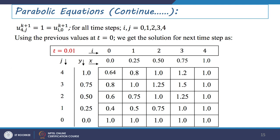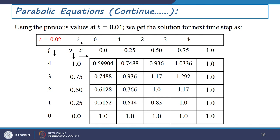The values at T = 0.01 represent U at the first time level and are used for the next step calculation. Using those previous values, the solution at T = 0.02 is computed for I = 0, 1, 2, 3, 4 and J = 0, 1, 2, 3, 4. Boundary values remain fixed; only interior values are updated using the explicit formula. This completes the two-step explicit solution. Thank you for listening to this lecture.